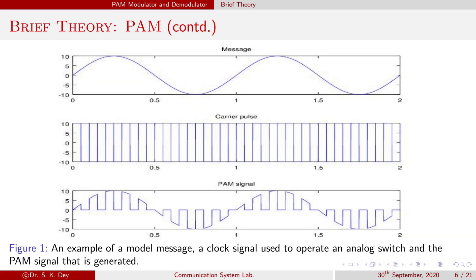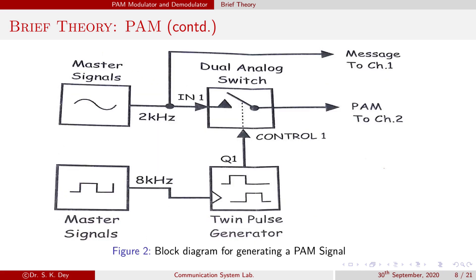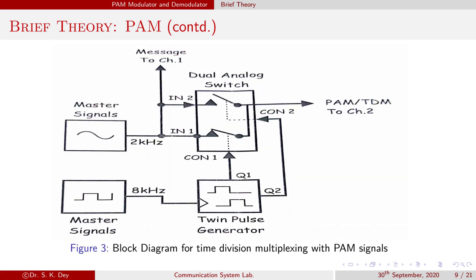This is an example of the message signal, the corresponding carrier, and the PAM signal. This is the block diagram for generating a PAM signal. This is the block diagram for time division multiplexing with PAM signal.